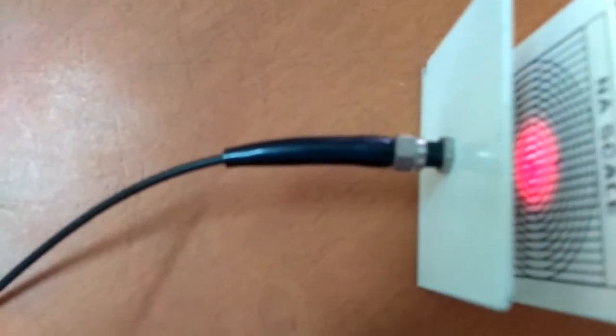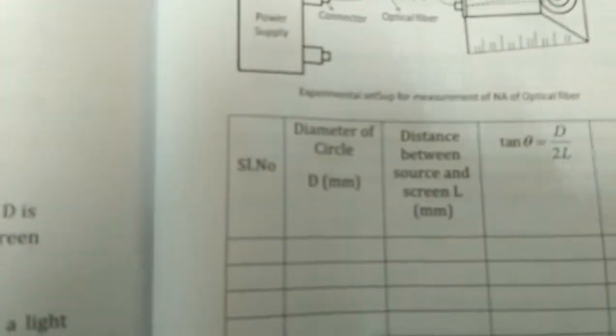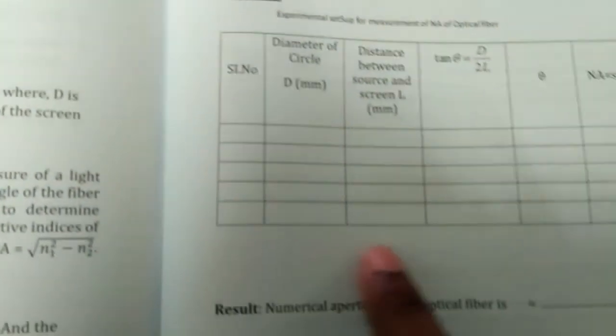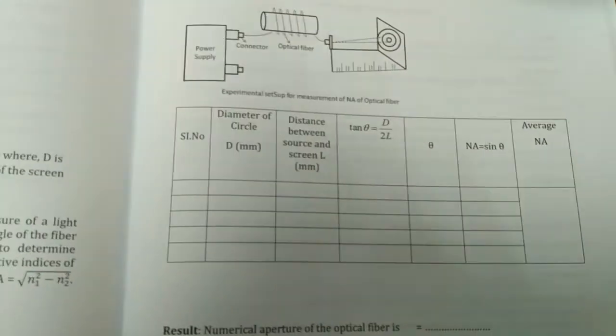Once we find those lengths, that will be your distance L - the distance between source and screen. So we tabulate tan theta, we get theta, so that we can calculate the numerical aperture.